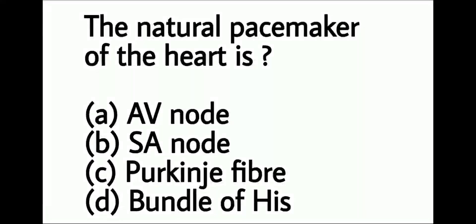Next question: The natural pacemaker of the heart is — option A: AV node or atrioventricular node, option B: SA node or sinoatrial node, option C: Purkinje fiber, option D: Bundle of His.